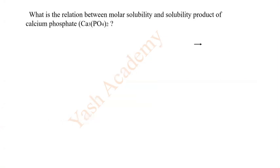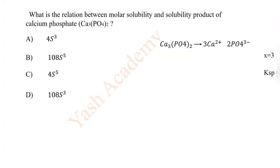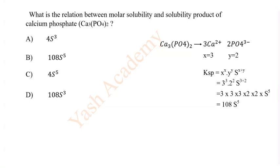What is the relation between molar solubility and solubility product of calcium phosphate? Options: A 4S³, B 108S⁵, C 4S⁵, D 108S³. Calcium phosphate dissociates and we can calculate in this way. So correct answer is D: 108S⁵.